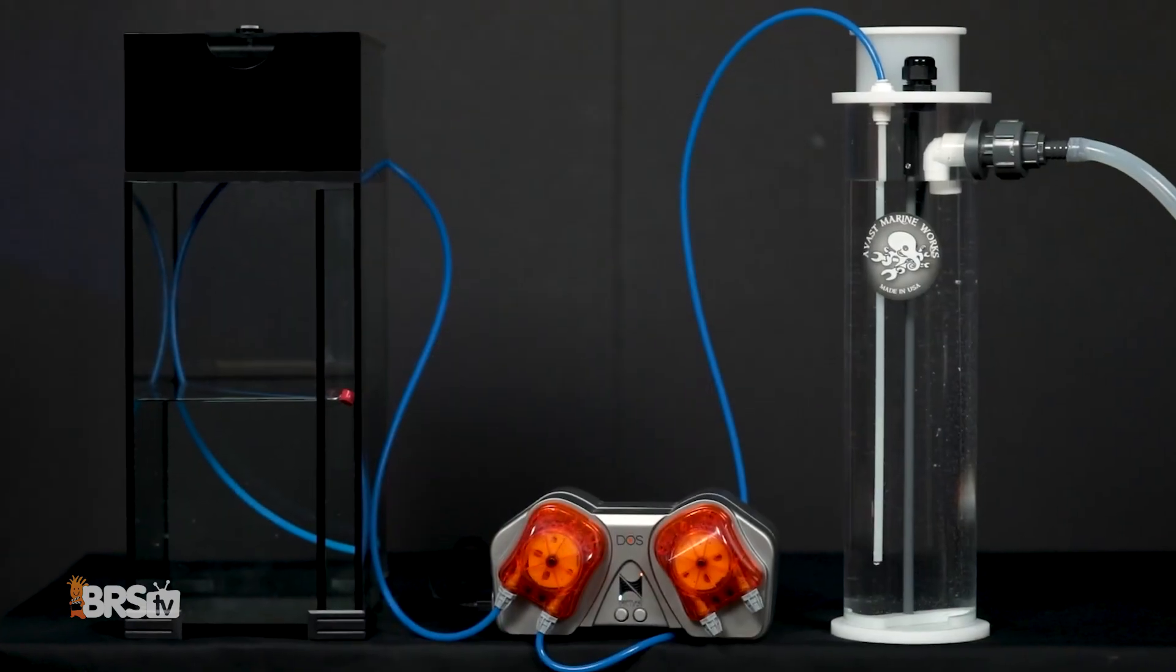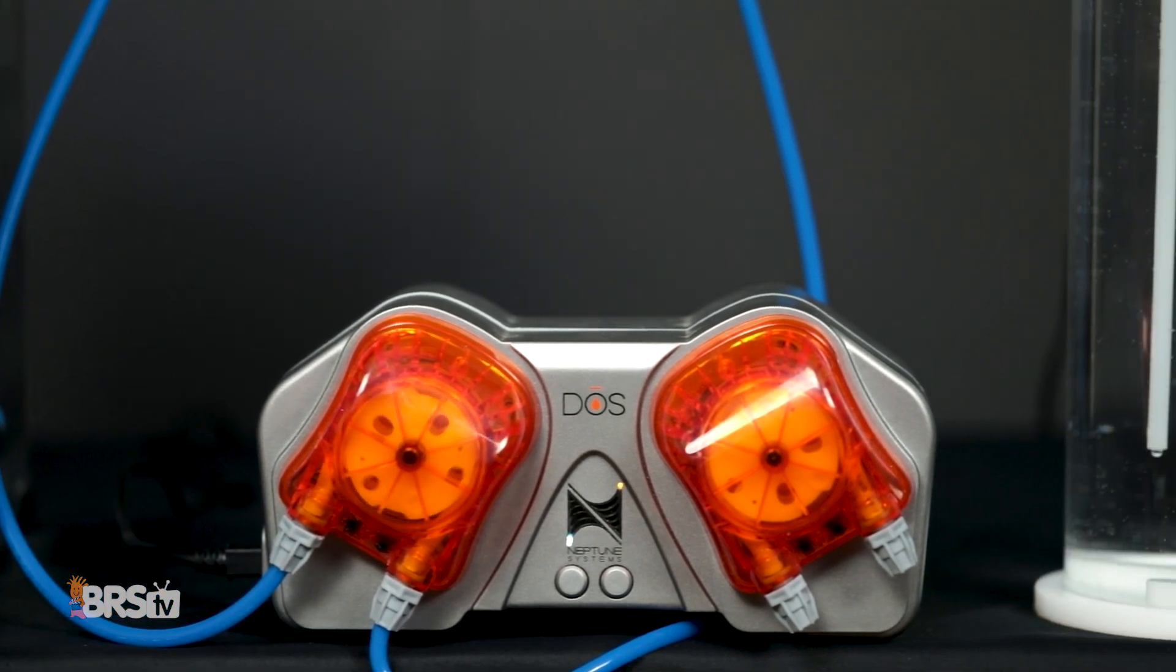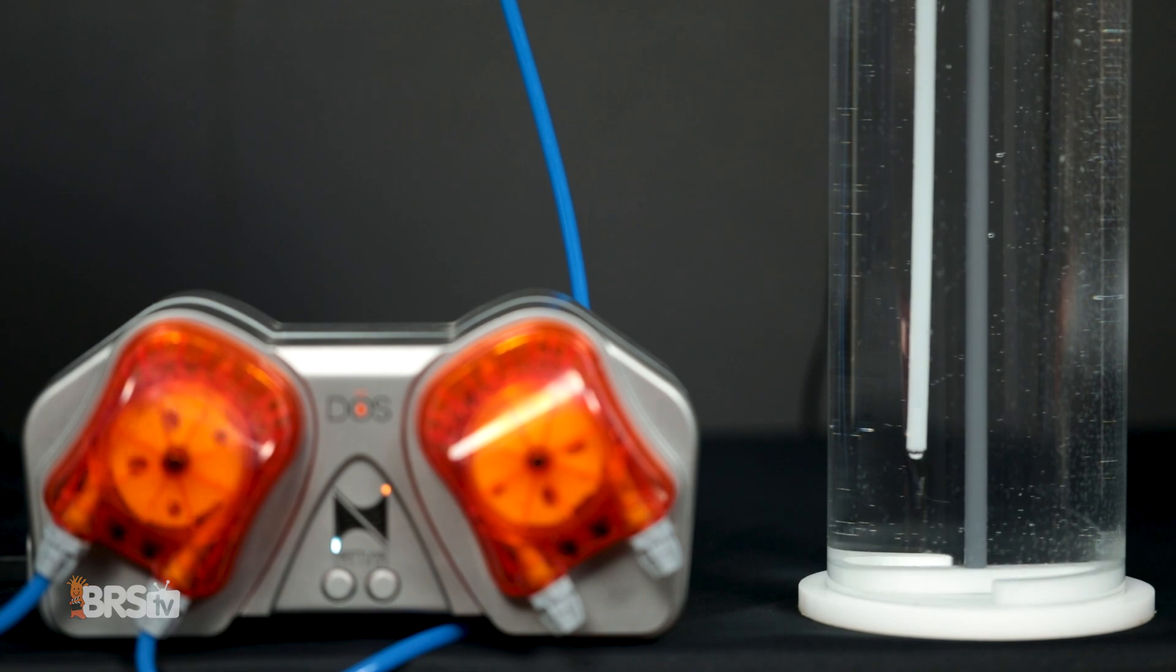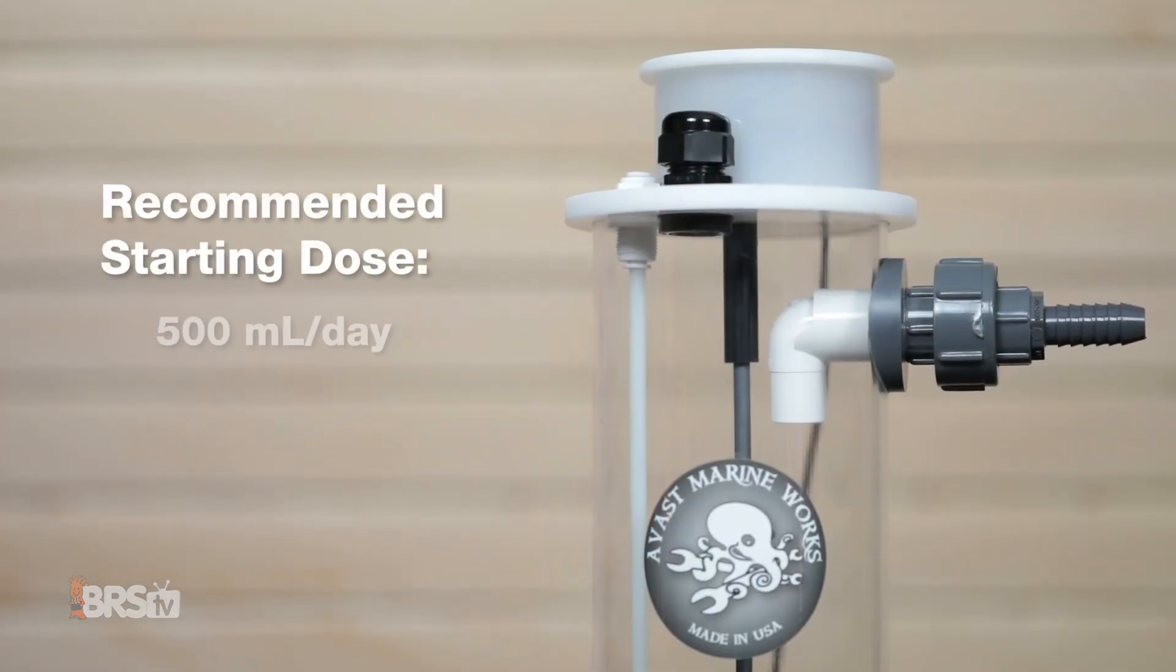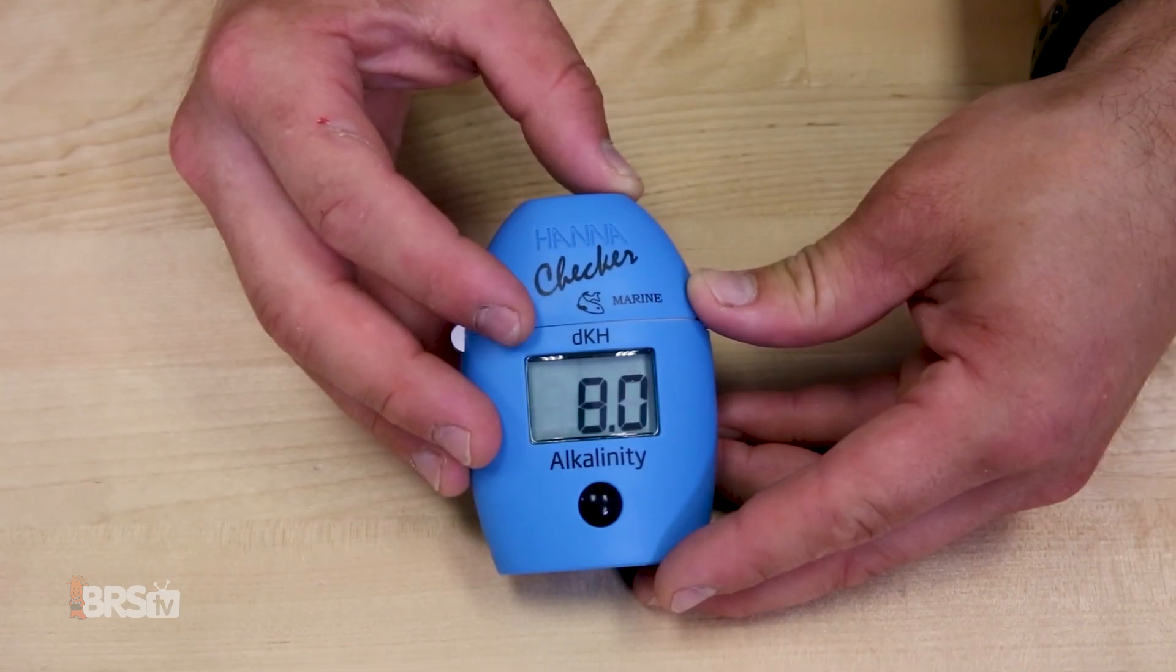Here at BRS, our favorite and recommended way of setting up a calc stirrer is to use a dosing pump to draw RO water from our RO reservoir and feed it directly to the calc stirrer. We recommend a starting dose of around 500 milliliters per day and monitoring your alkalinity levels to increase or decrease your calc dose as needed.